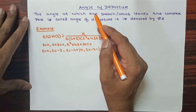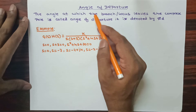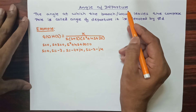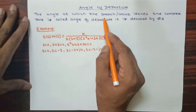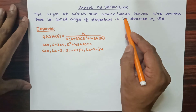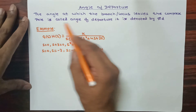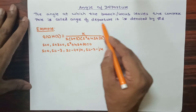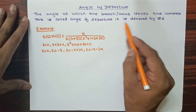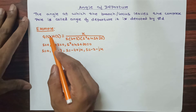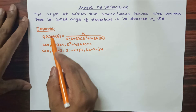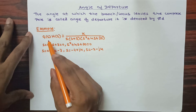Hello friends, welcome to ACE Tutorials. Today we are going to discuss angle of departure in root locus method. The angle at which the branch or locus leaves the complex pole is called angle of departure. It is denoted by φd. With an example we'll see how to calculate angle of departure.